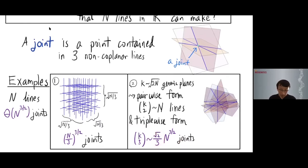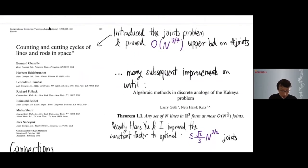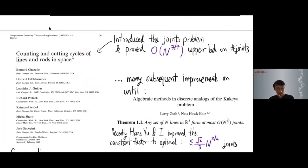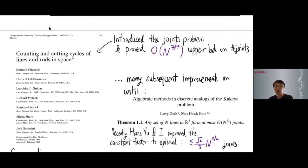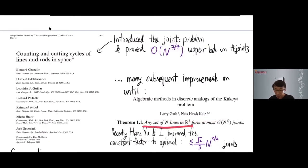This problem was first introduced in a paper called 'Counting and Cutting Cycles of Lines and Rods in Space,' which considered many problems in discrete and computational geometry. The authors introduced the joints problem and proved a non-trivial upper bound of n^(7/4). Subsequent work improved the exponent until Guth and Katz solved it, proving that n lines in R³ form at most O(n^(3/2)) joints.